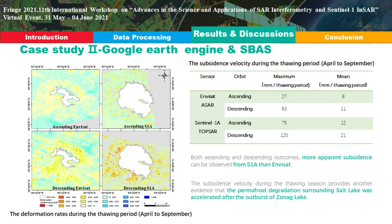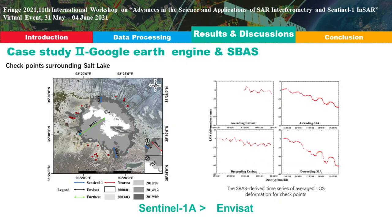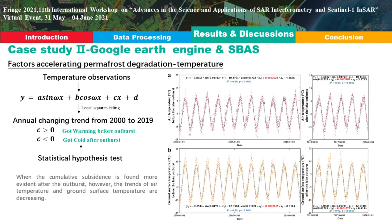For surface deformation results surrounding Salt Lake, both ascending and descending results show that more apparent subsidence can be observed from Sentinel-1 than from Envisat ASAR. The larger subsidence observed after the lake outburst provides evidence that the outburst of Hurleg Lake may significantly accelerate permafrost degradation surrounding the tail-water lake.